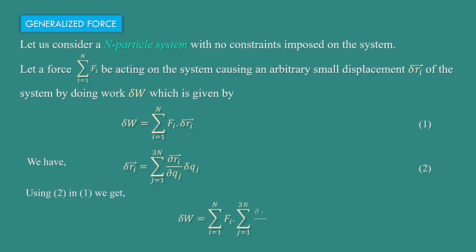Using equation 2 in equation 1, we get δW = Σ(i=1 to n) fi · Σ(j=1 to 3n) (∂ri/∂qj)δqj.